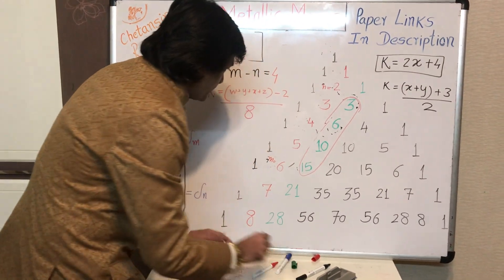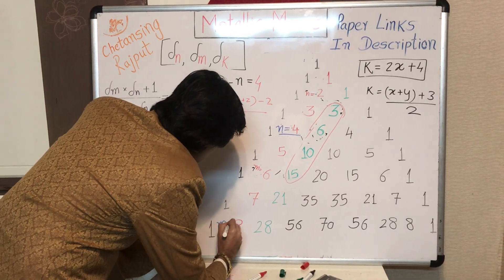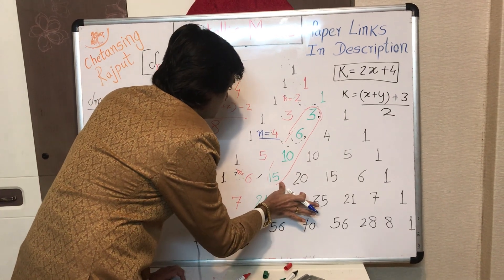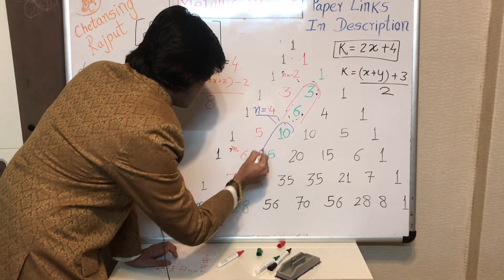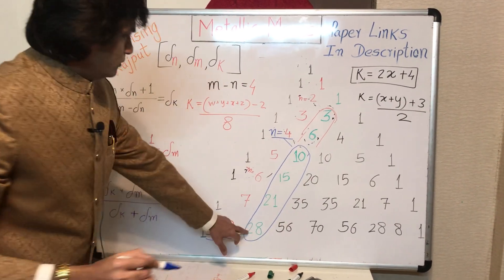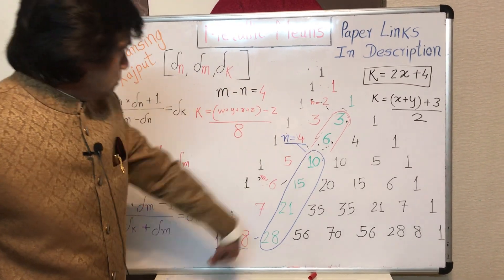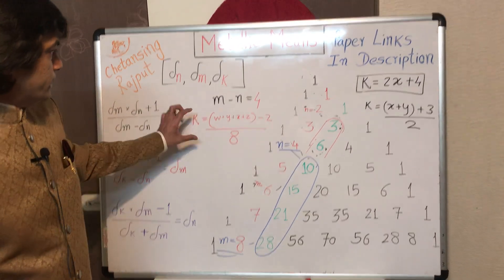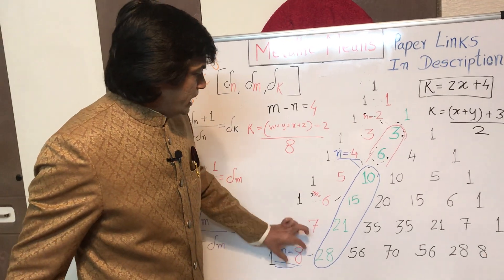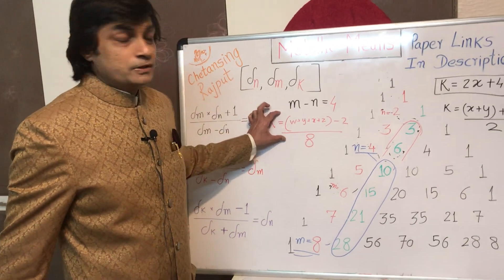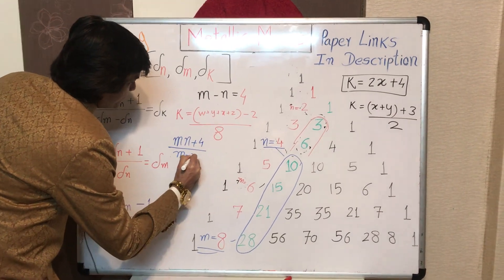Take another example: N equals 4 and M equals 8, so M minus N equals 4. We consider all four integers on the triangular number diagonal between 4 and 8 — that is 10, 15, 21, and 28 as W, X, Y, and Z. They add up to 74. So 74 minus 2 upon 8 gives K equals 9. Hence we get the triad 4, 8, and 9 — the fourth, eighth, and ninth metallic ratios form this triad.